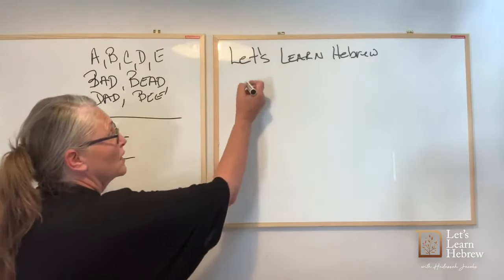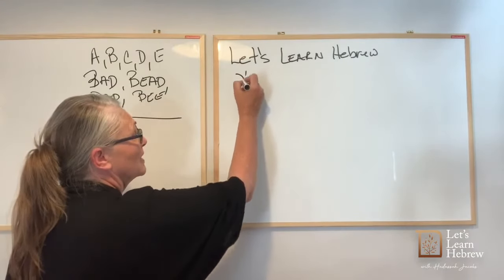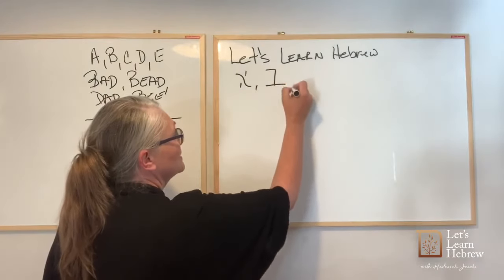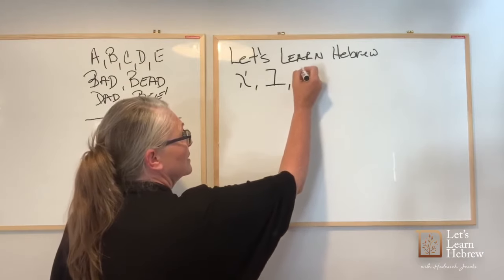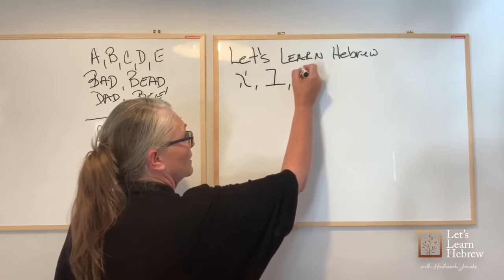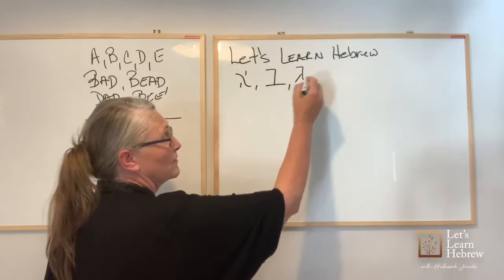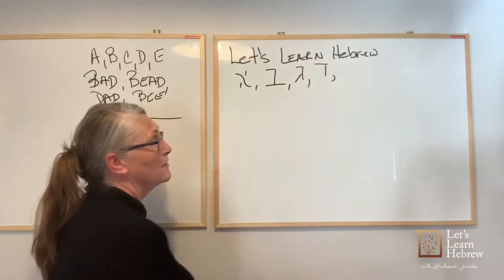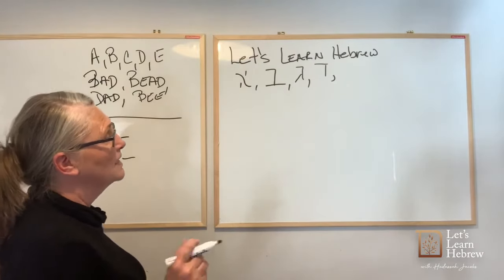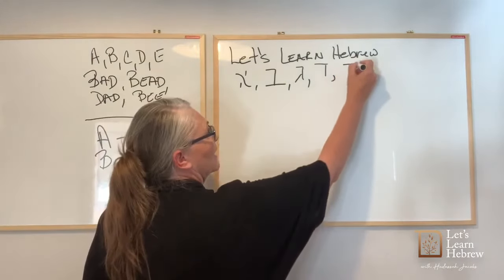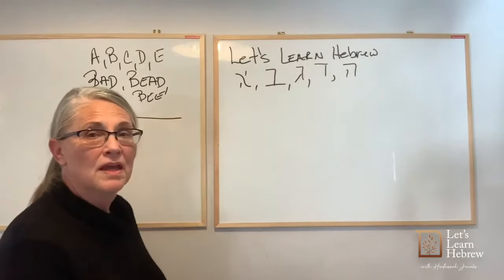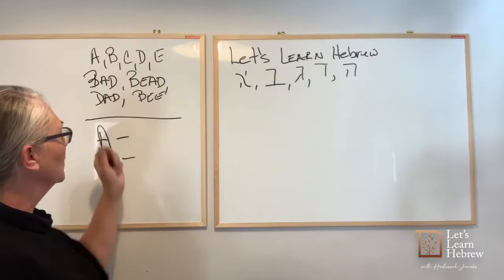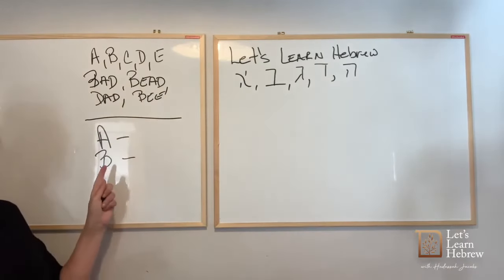So the first letter of the Hebrew alphabet is Aleph. The second one is Beetz. The third one is Gimel. The fourth one is Dalet. And the fifth one, Aleph, Beetz, Gimel, Dalet, He. So now I gave you five letters here, A, B, C, D, E. We made words, but they have no meaning.